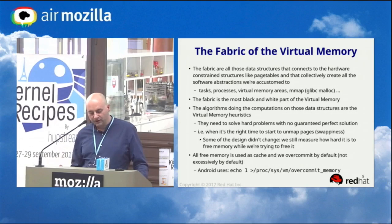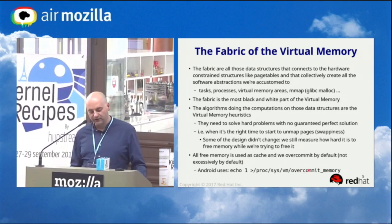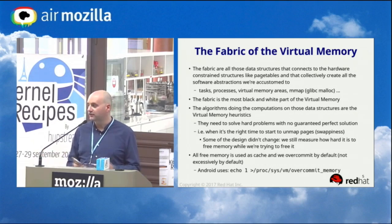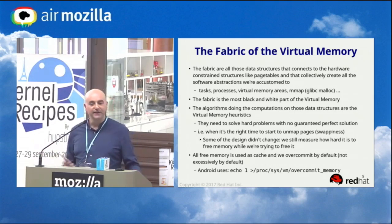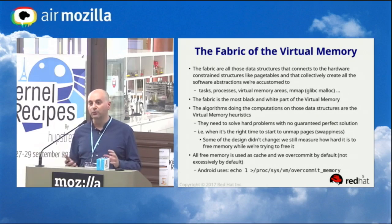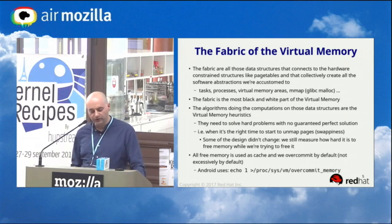Android uses overcommit: it sets the overcommit_memory sysctl to 1 by default. The default of 0 means some checks are done — if you malloc 10 terabytes but only have 4 gigabytes, it says no. But you can still allocate more than the total sum of RAM plus swap because the kernel is optimistic. Android disables even those optimistic checks, so it is completely overcommitted.